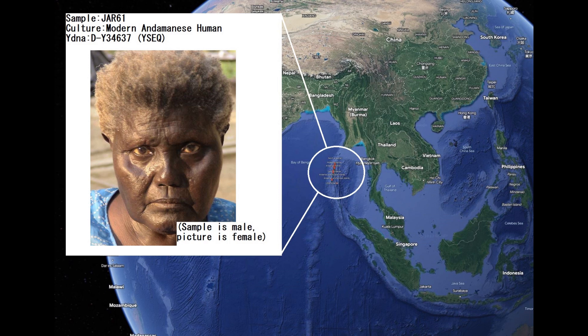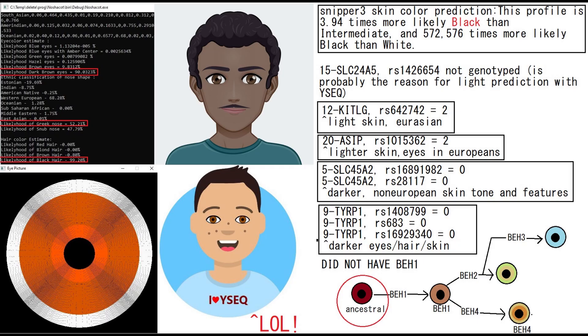It's a guy, as you can see from the picture I chose for Andamanese. This is just to show you what they look like, but the picture is a female — however, the sample is actually a guy. And this is what he looked like. My Nashakotu predicts him to have dark brown eyes, and surprisingly, the same likelihood of a Greek nose as a snub nose, which is kind of interesting. And black hair — definitely black hair.